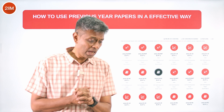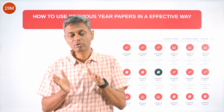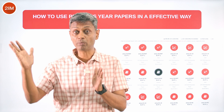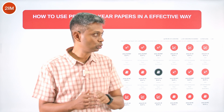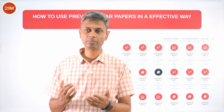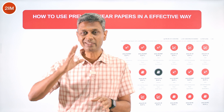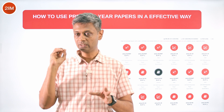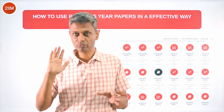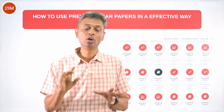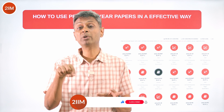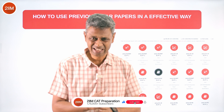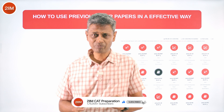My recommendation is to save some for taking as full-length mocks. Save 2024 and 2023 — take those in a simulated setting, see where you land, what your percentile would have been. That is six papers. Everything else, go category by category.